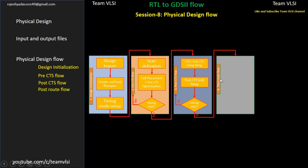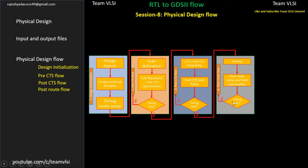Inside the post-route flow, first we do the routing. After routing, we get the actual routing metals on the layout. Then next is post-route setup and hold optimization. Then we check the timing requirement again. If it is met, we move to the next stage; else we repeat these steps until the timing requirement is met.